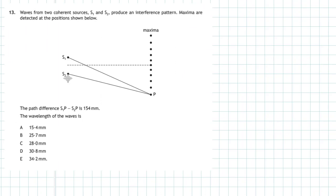Question 13 from Section 1 of the 2018 Higher Physics examination. Waves from two coherent sources S1 and S2 produce an interference pattern. Maxima are detected at positions shown. The path difference between S1 and P, and S2 and P, is 154 millimetres. The key point is that at each maximum you get a whole number of wavelengths: the first maximum has path difference of one wavelength, second has two, third has three, fourth has four, fifth has five wavelengths.